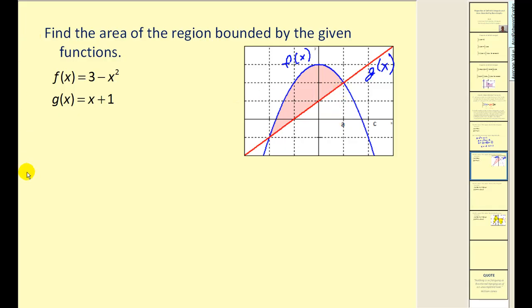So the area bounded by these two functions will be the definite integral of f of x minus g of x, since f of x is on top, on the interval from negative two to positive one.